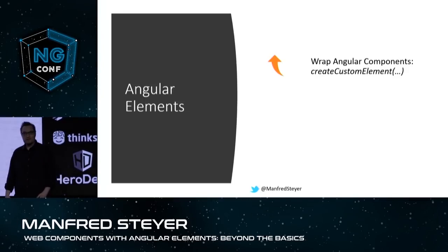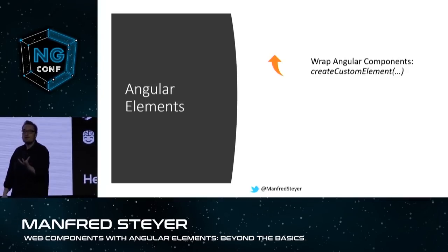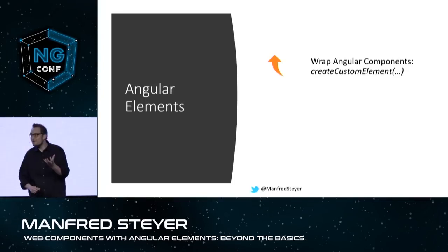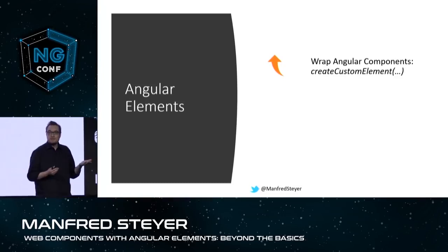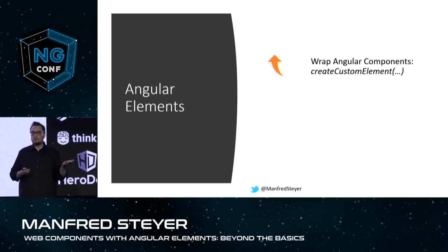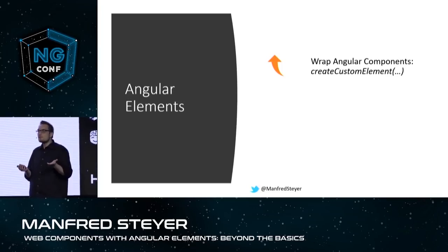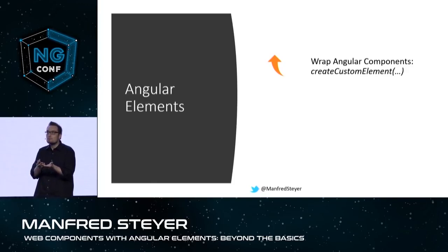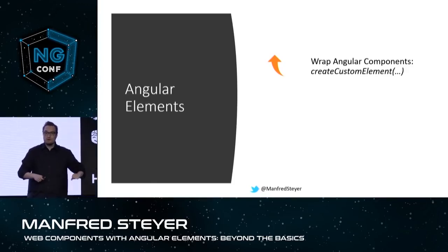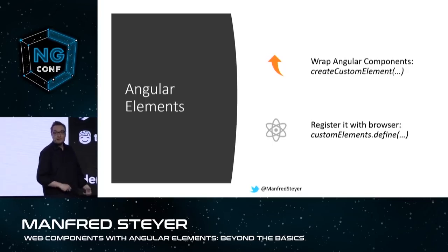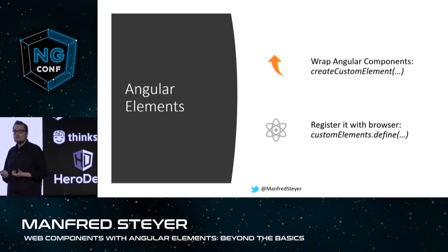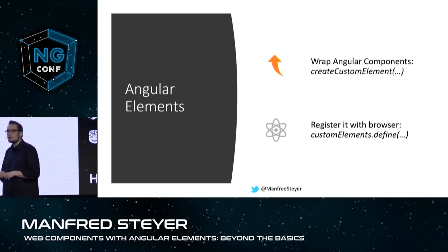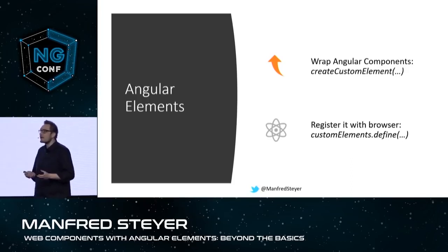Angular Elements is just about wrapping Angular components. That means you take an ordinary Angular component, you call this function called createCustomElement, and this function exposes a custom element. That means your Angular component goes in, the custom element goes out. Then you can register this custom element with the browser API called customElements.define, and now the browser can just render your component.